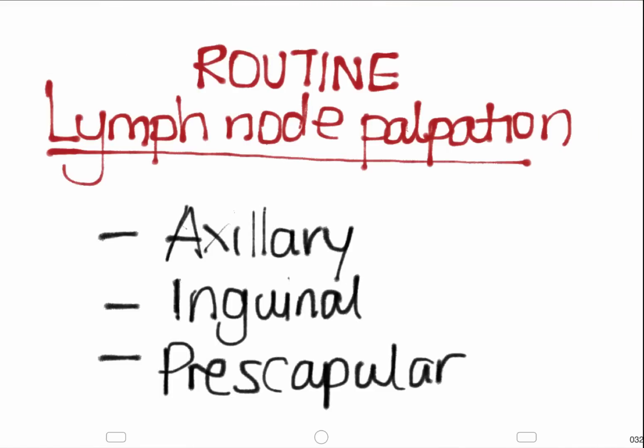The three lymph nodes that should be routinely palpated are the axillary, inguinal, and pre-scapular lymph nodes. These should not be palpable in the healthy dog.